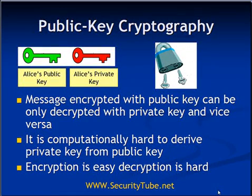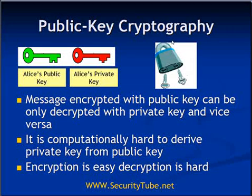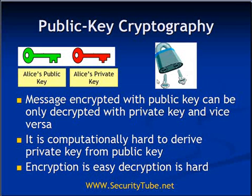To understand how public key cryptography works, take the analogy of a special lock that has two keys. With the first key you can lock it, and with the second key you can unlock it. If you have only the first key, you can only lock the lock but cannot unlock it. For unlocking, you need the second key. That is the basic principle behind public key cryptography.